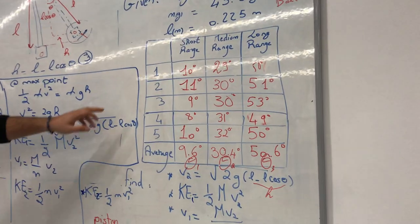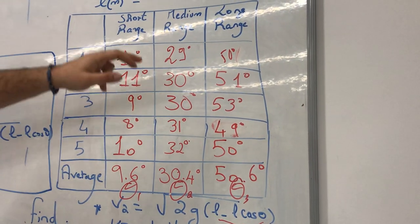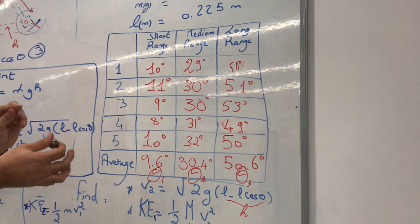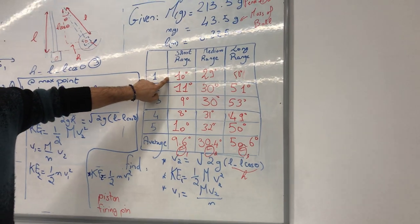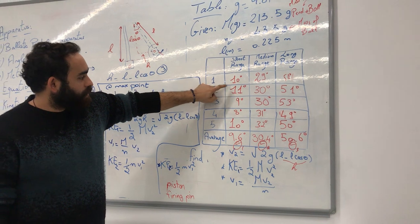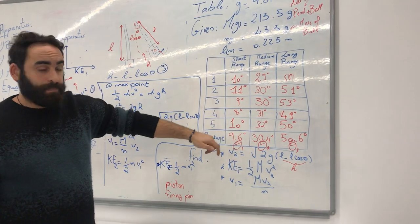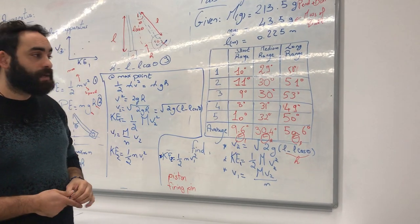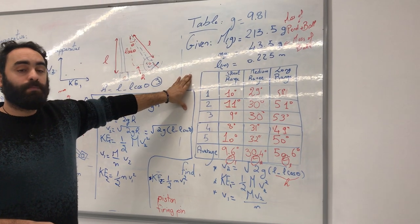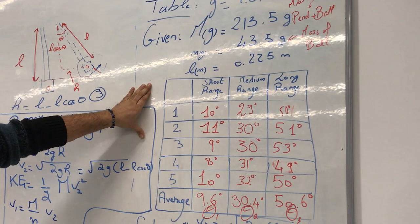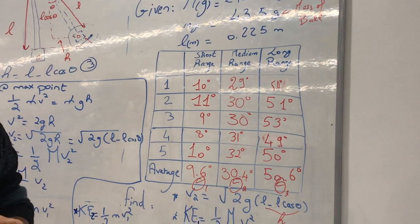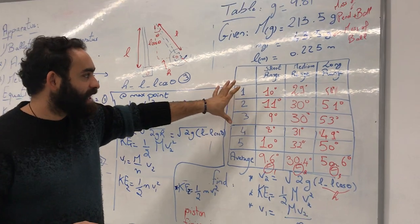We did short range, medium range, and long range — five times each — for better accuracy. Each time, we pull, put the ball in, release, and record the maximum angle. For each range, we have five trials and we take the average. This table should be exactly the same for everyone — exactly the same numbers and exactly the same average. If you don't have exactly this table, you will get a zero.